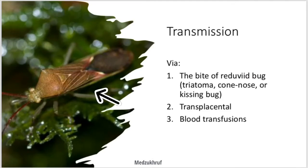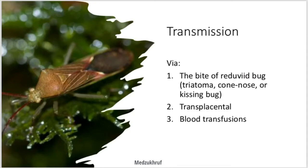On the left side you can see a bug — this is a reduviid bug. When it bites a human, it is responsible for transmitting Trypanosoma cruzi into the human body, which causes Chagas disease. The transmission occurs via the bite of the reduviid bug, also called triatoma, cone nose, or kissing bug — I'll discuss why it is called kissing bug a bit later.